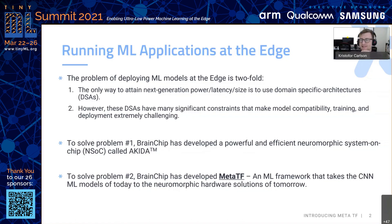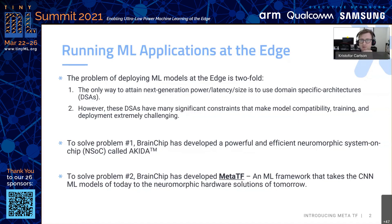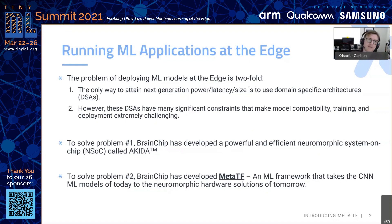So you want to run ML applications at the edge, right? And the problem usually is twofold — there's a hardware problem and a software problem. So first, let's talk about the hardware problem. Usually the only way to attain next-generation power, latency, and size is to use something called domain-specific architectures, or DSAs. These hardware devices make a very specific tradeoff: they trade flexibility for efficiency. They usually run a smaller subset of operations than a GPU, and they have tighter memory and compute constraints.